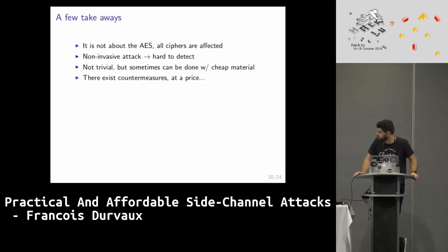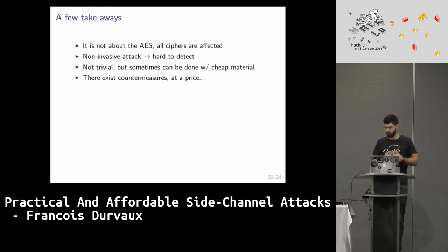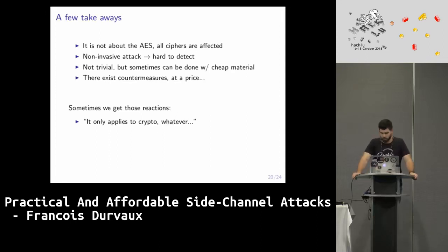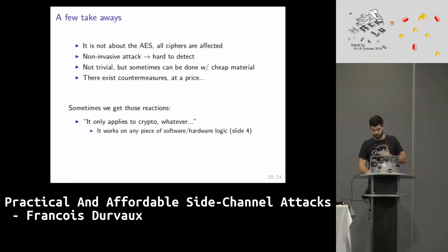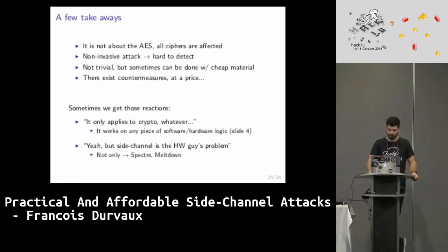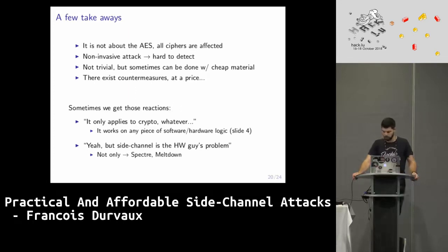Countermeasures do exist — there is a wide range of them — but usually the more efficient your countermeasure, the more you decrease the performance of your implementation. It comes at a price. A common reaction is that side-channel attacks only apply to cryptography, but that's not true — as shown at the beginning, people use them to attack anything that was secret at some point. Another misconception is that it's only the hardware guy's problem, which is not entirely true either: the Spectre/Meltdown attacks were done remotely and were not exclusively a hardware problem.